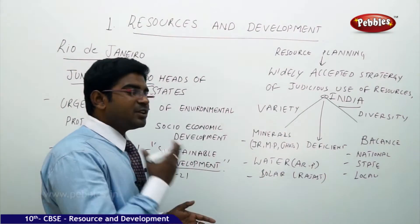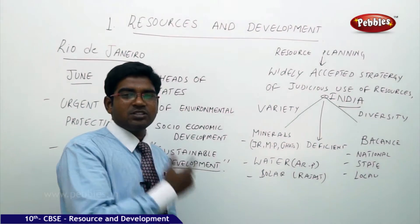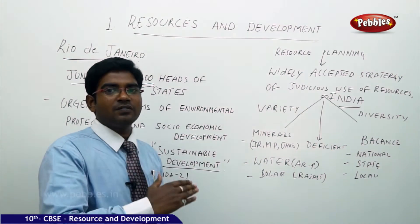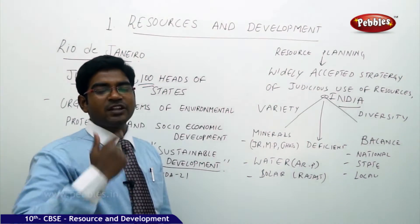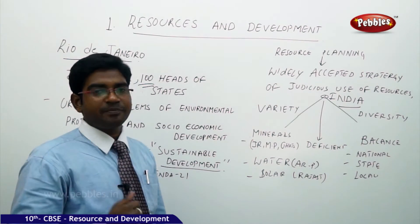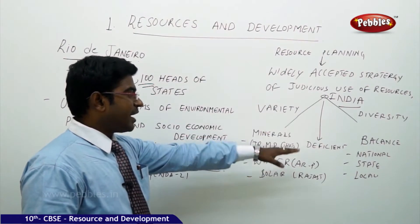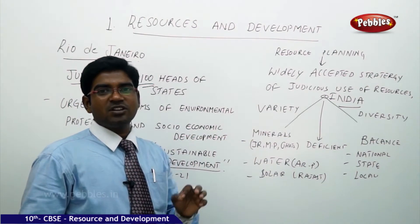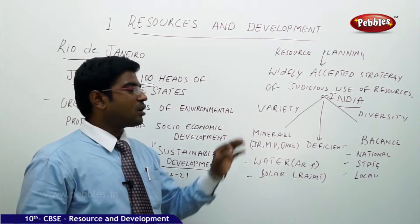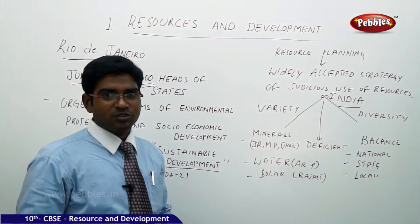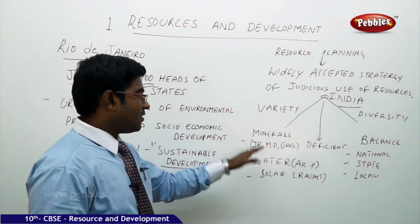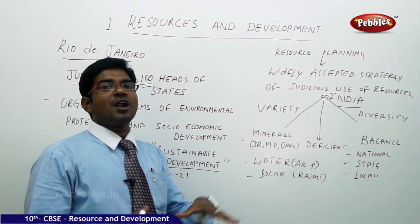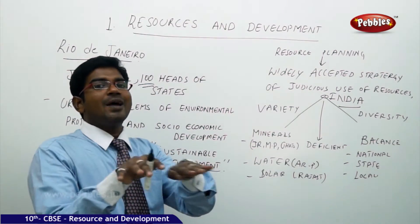Certain minerals are available in one region of the country but not in another. So we have a variety of minerals on one side, and a deficit of minerals on the other. The availability and deficit of minerals and resources must be brought into balance.